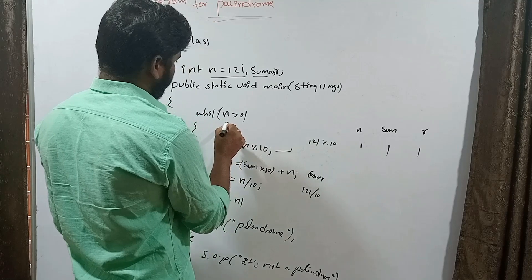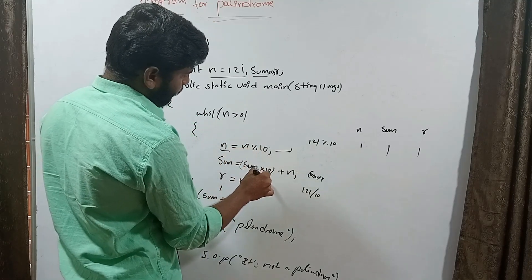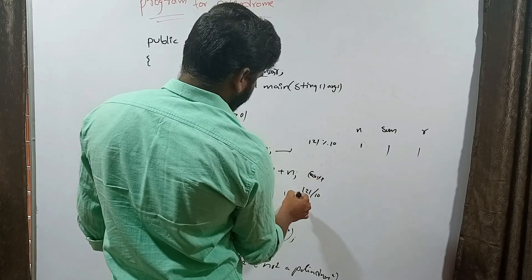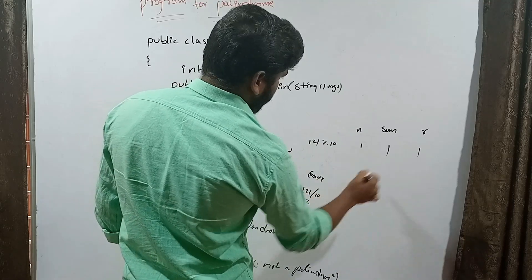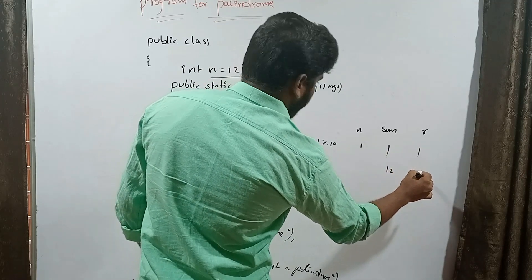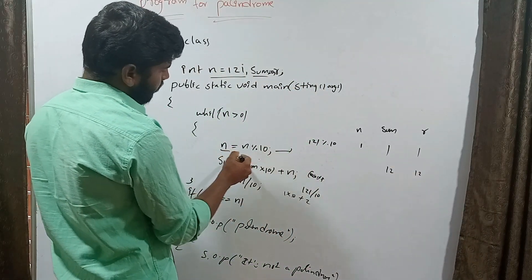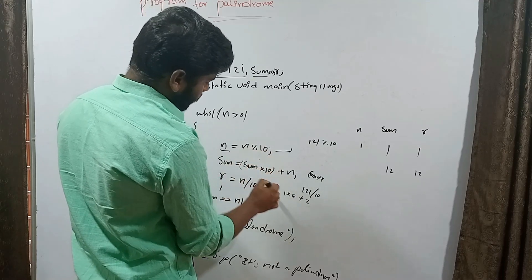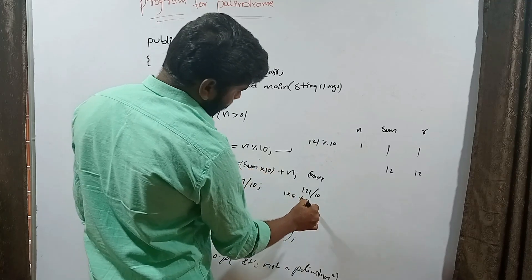Second iteration — n is 12, which is greater than zero. Sum becomes 1 into 10 plus remainder 2 equals 12. r is also 12. Then n becomes 1. Third iteration — sum becomes 12 into 10 plus 1 equals 121. So reverse is 121, which equals the original number 121.